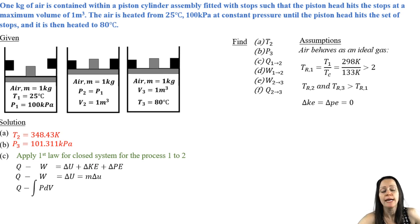And that W is my boundary work, right? I have no other work that's going on except expansion work from one to two. And so the integral of PDV, because that pressure is constant, P comes right out of the integral. The integral of DV is just delta V. And of course, all of this, I could put that in terms of specific volume. And of course, all of this is equal to M delta little u.